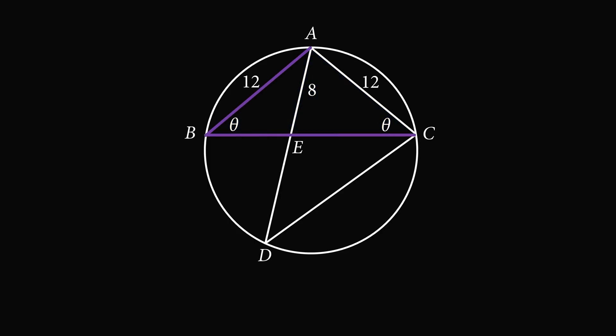Now, angle ABC is an inscribed angle of the circle and it subtends the chord AC. But we also have angle ADC is another inscribed angle of the circle, and it subtends the same arc AC. Therefore, the inscribed angle ADC also has measure equal to the angle ABC, so it's also equal to theta.